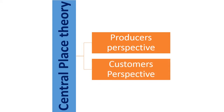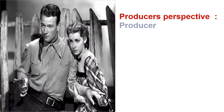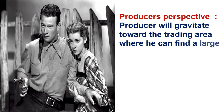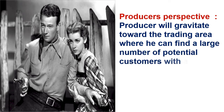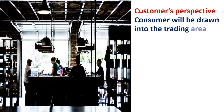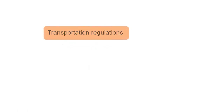Producer's Perspective: The producer will gravitate toward the trading area where he can find a large number of potential customers with a higher disposable income. Customer's Perspective: The consumer will be drawn into the trading area where he can find particular desired products.